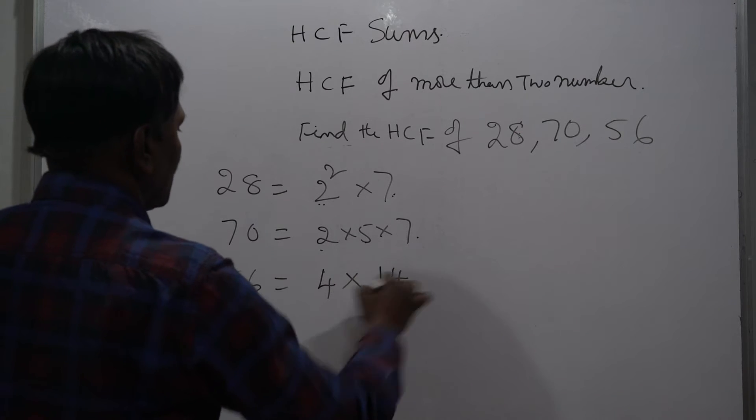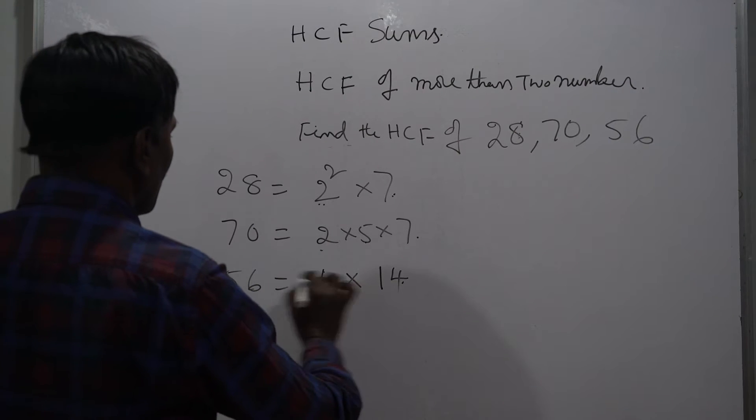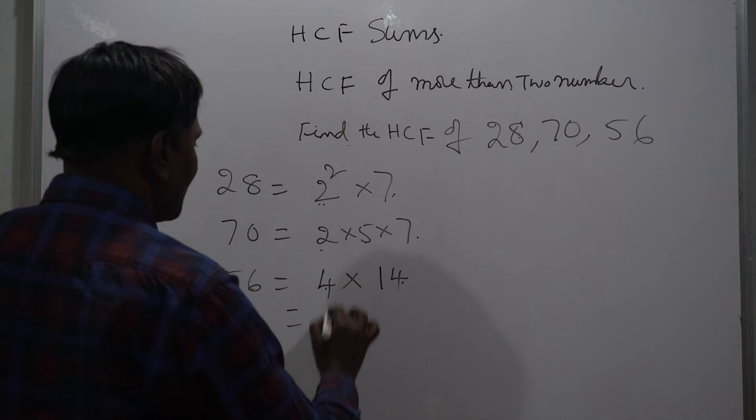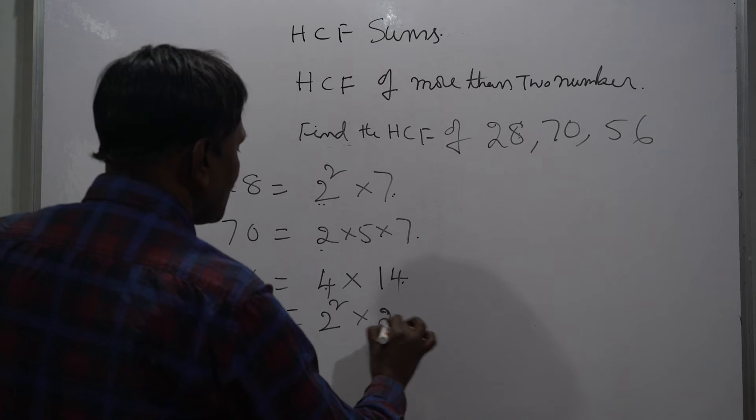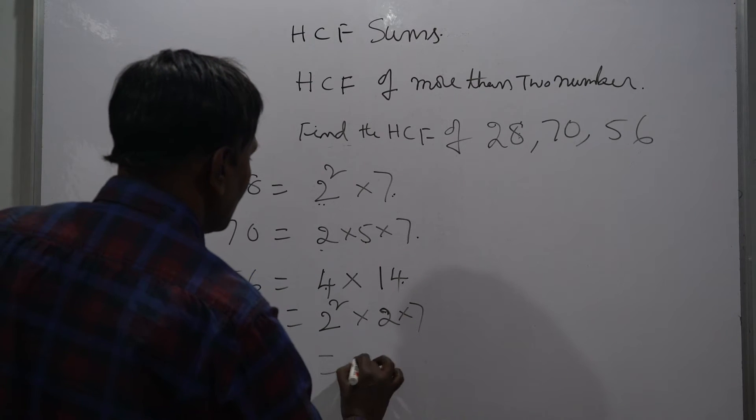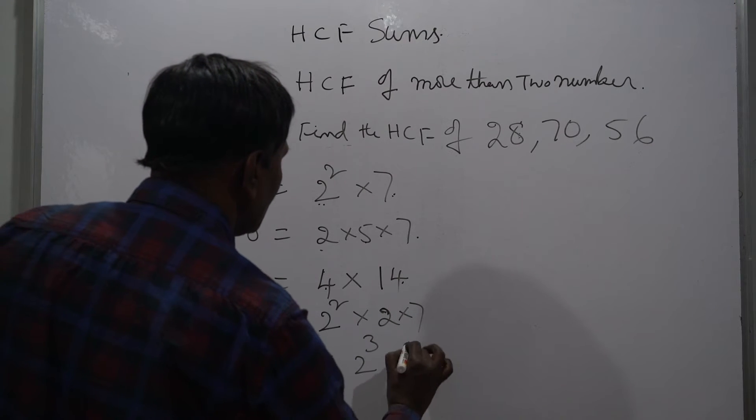28 is 14 into 4, which is 56. This can be written as 2 squared. This can be written as 2 into 7. This can be 2 cubed into 7.